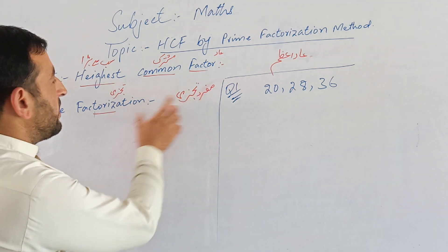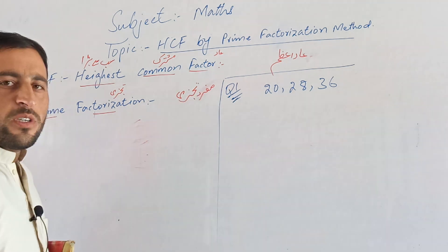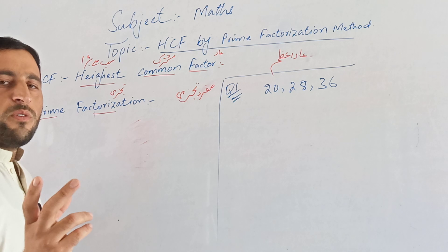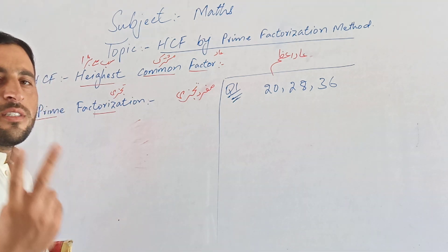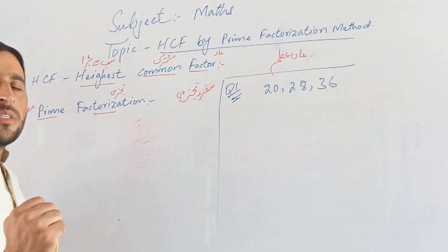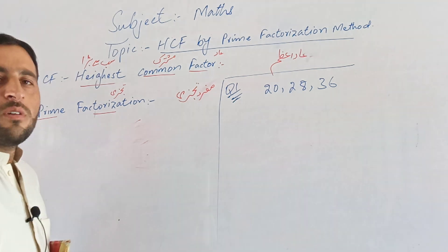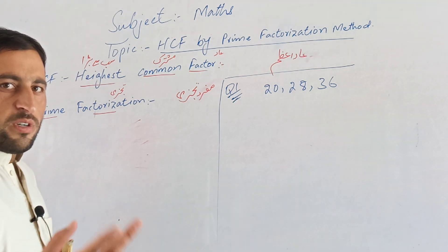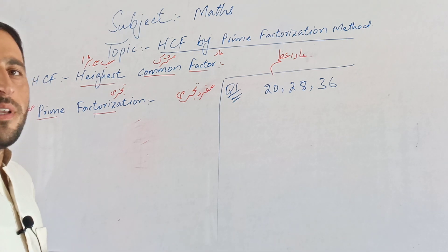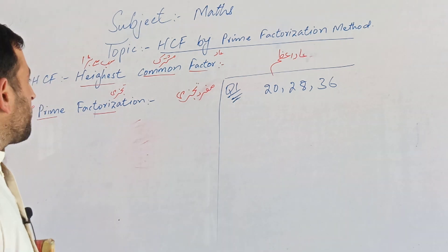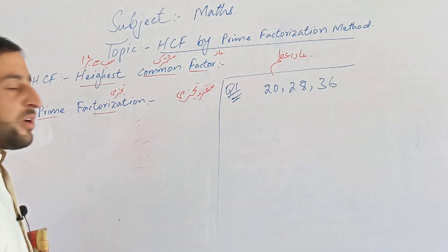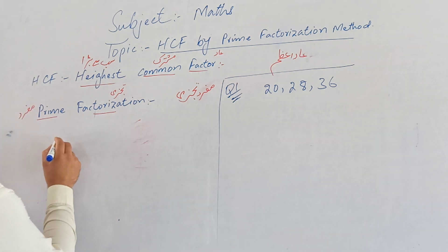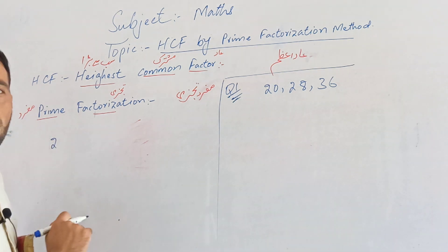The prime factorization method is the first method. When you apply this method, every number will be broken into its factors. A prime number has only two factors: one and itself. For example, two is a prime number.